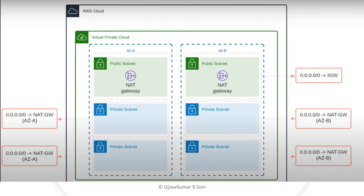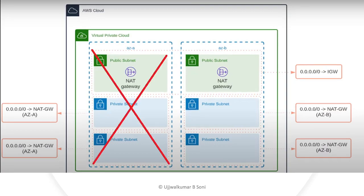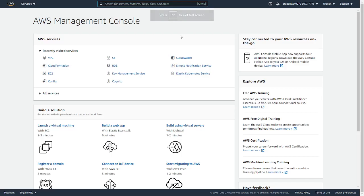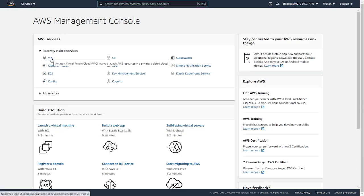Our task is to make this infrastructure highly available so that if any availability zone goes down, the other one can respond. If availability zone A goes down, the resources in zone B should be able to respond. Let me quickly log into my AWS console and drive you through the best practices and troubleshooting. Let's navigate to VPC.